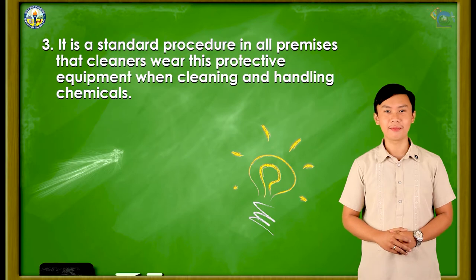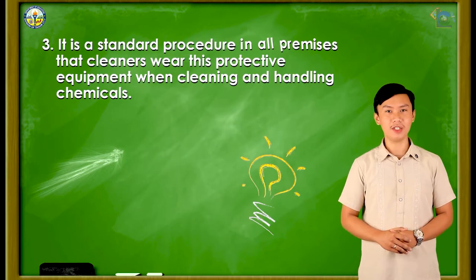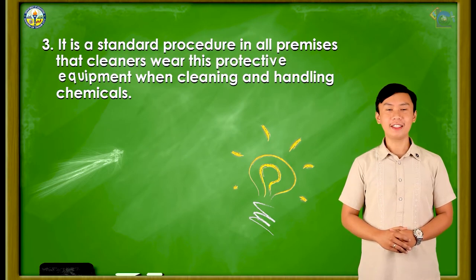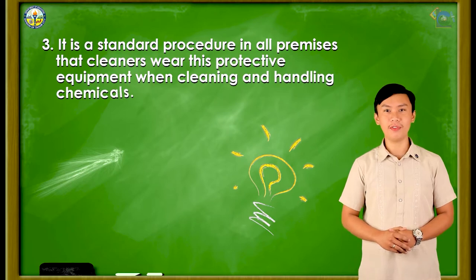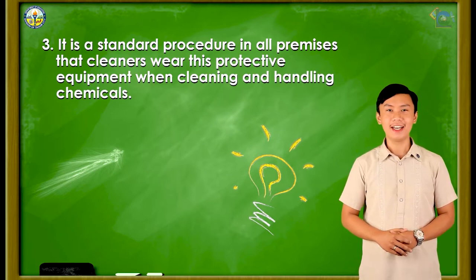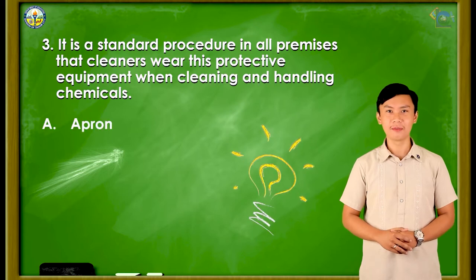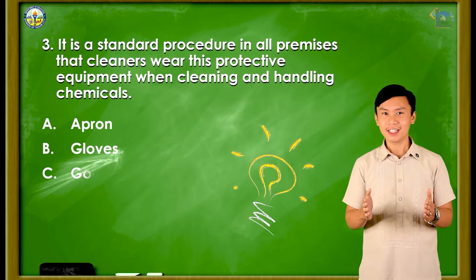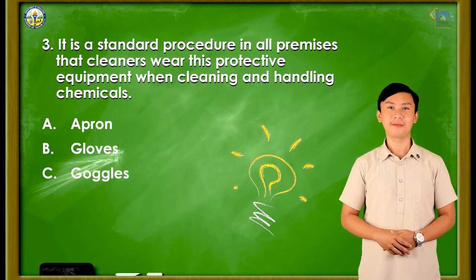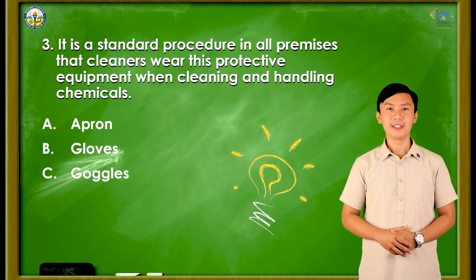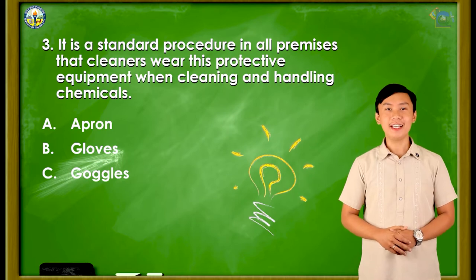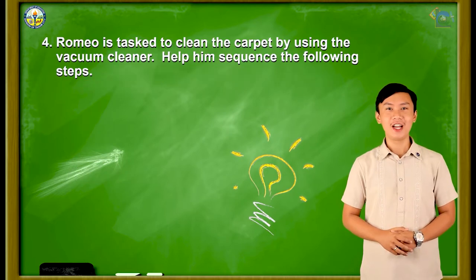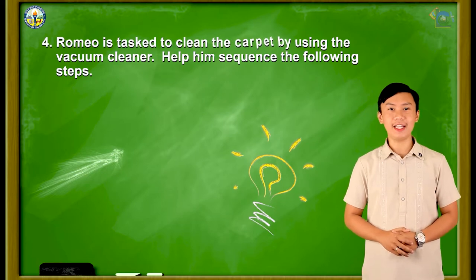Question number 3: It is a standard procedure in all premises that cleaners wear this protective equipment when cleaning and handling chemicals. Letter A: Apron. Letter B: Gloves. Letter C: Goggles. And the correct answer is letter B.